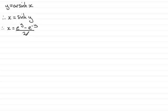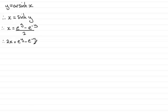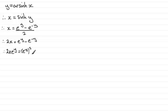If I multiply through by 2, we therefore have that 2x equals e to the power y minus e to the power minus y. Now remember that e to the power minus y is 1 over e to the y. So I'm going to multiply both sides by e to the y, giving us 2x times e to the power y equals e to the power y squared minus 1.